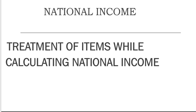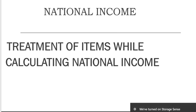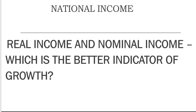The third question is again a similar one: treatment of various items while calculating national income. This has repeated many times — even a six-marker appeared in boards. A hint for calculating national income is that you need to apply the SWIFT rules we discussed earlier. You have to check whether the person is a normal resident of India.